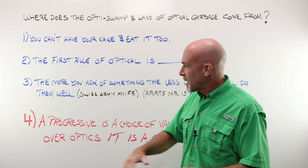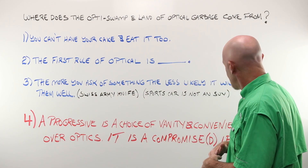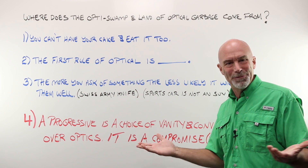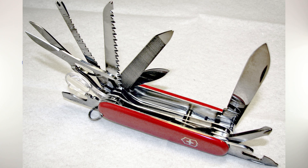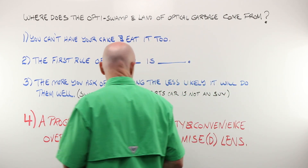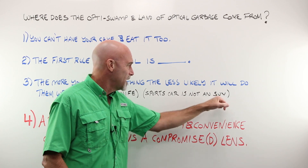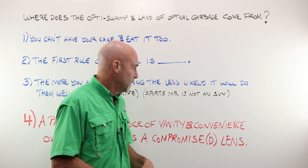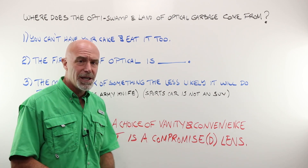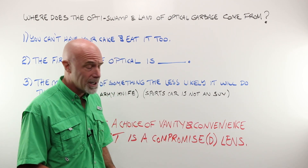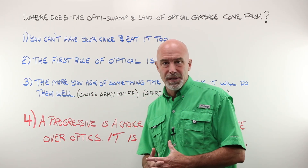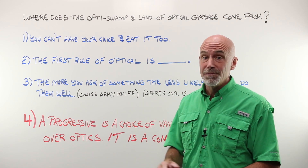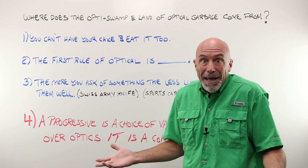Number three: the more you ask of something, the less likely it will do them well. It's like the Swiss army knife — yes, it can do 140 different things, all of them kind of poorly, and it weighs seven pounds. Not really a very useful tool. A sports car is not an SUV, and an SUV is not a sports car. If you try to take your Ferrari down a Jeep trail, you're not going to get very far. That is what you're asking a progressive lens to do — some things that it really can't.